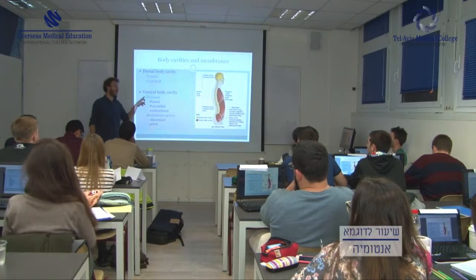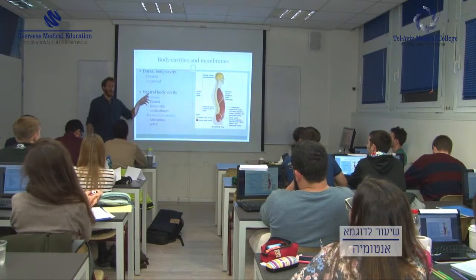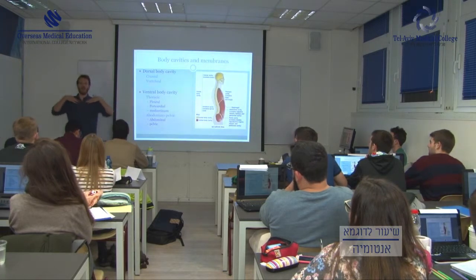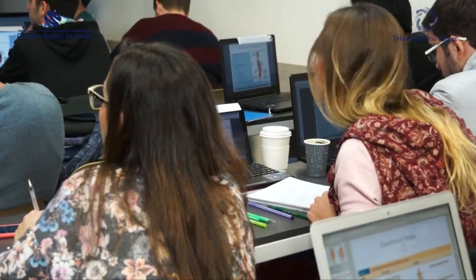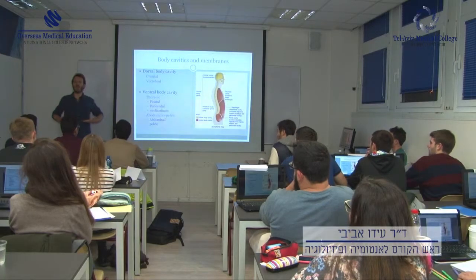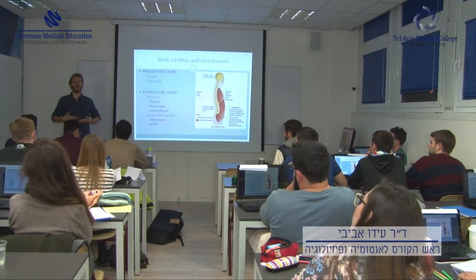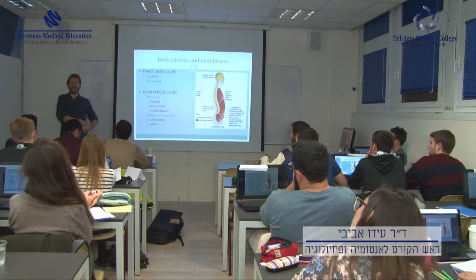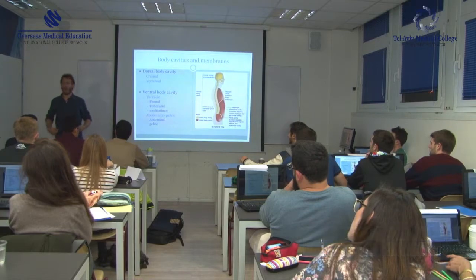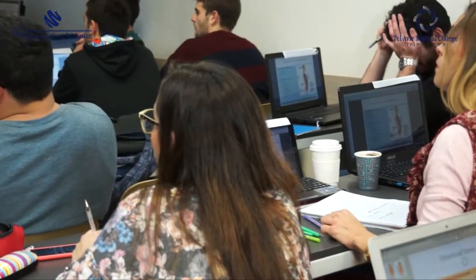The thoracic cavity basically starts here with the bones of the clavicles and ends in a muscle we mentioned earlier. What's the name of the muscle that goes through here? Diaphragm.